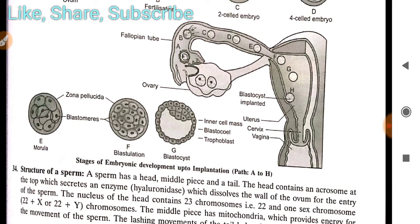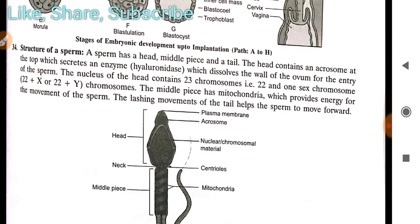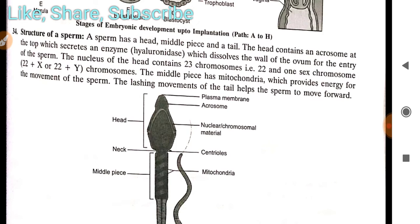Read from the book as well — these are just the important terms briefly covered. Regarding the structure of a sperm, it is an important topic because many exam questions come from it. A sperm has three parts: a head, a middle piece, and a tail. The head contains an acrosome at the top, which secretes an enzyme.